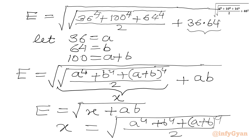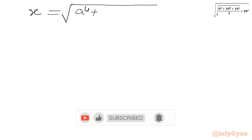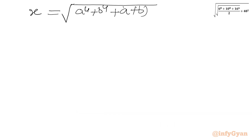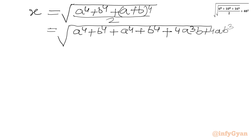Let us simplify X first. X equals square root of A power 4 plus B power 4 plus A plus B whole power 4, divided by 2. We will use binomial expansion. Using Pascal's triangle, power 4 gives us expansion coefficients 1, 4, 6, 4, 1. So we can write A power 4 plus B power 4 for coefficient 1, then 4A cubed B plus 4AB cubed for coefficient 4, and 6A squared B squared for coefficient 6, all over 2.